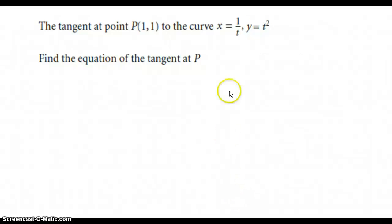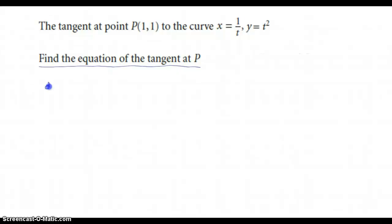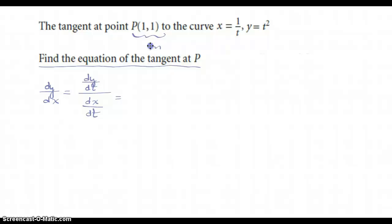Let's work an example: find the tangent at the point P(1, 1) to the curve x = 1/t, y = t². They want the equation of the tangent line at point P — something they'll ask you to do over and over in any context with any type of function. We need a point and a slope, and the slope must be the derivative at that point, with (1, 1) as the point of tangency.